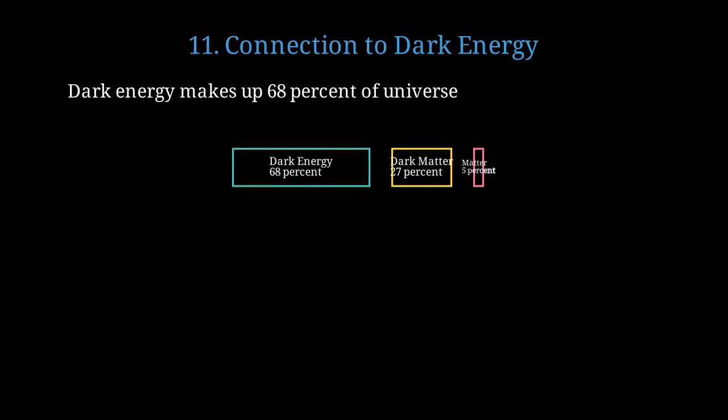Here's the energy budget of the universe. Dark energy dominates. Dark matter is 27%. Normal matter, everything we can see, is just 5%. Vacuum energy is the leading theoretical explanation for dark energy. But we can't explain why it has the tiny value we observe.